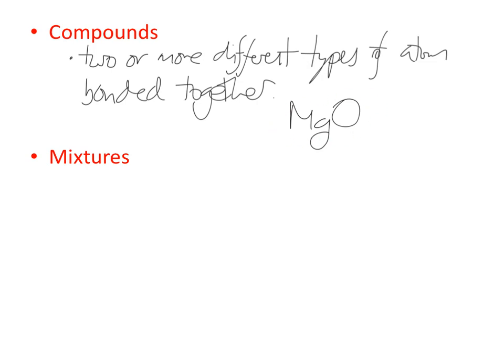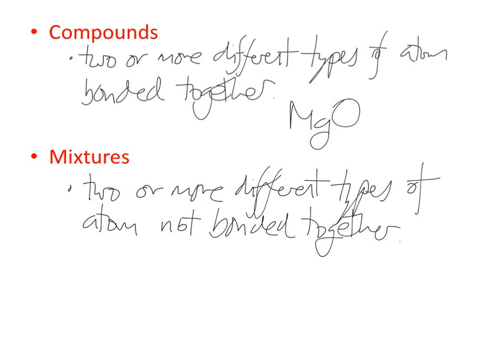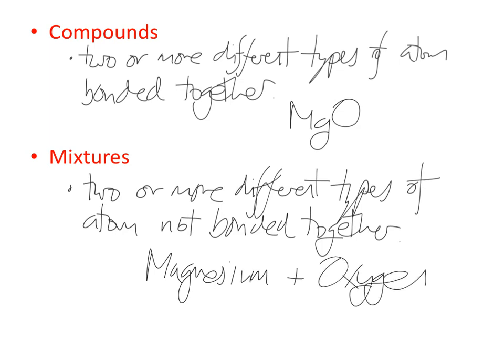Magnesium oxide is not a mixture, because the two different types of atom are bonded together. In a mixture, you have different types of atom but they're not necessarily bonded together — they're distinguishable. So a mixture has two or more different types of atom not bonded together. For example, whilst magnesium oxide is a compound, a mixture would just be a lump of magnesium surrounded by oxygen.